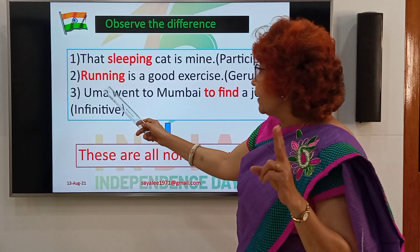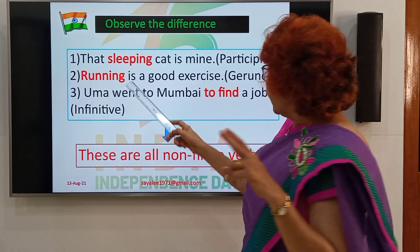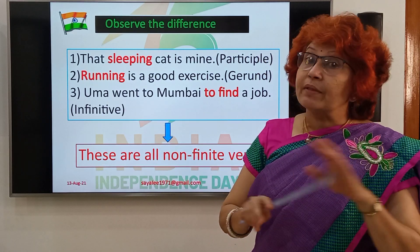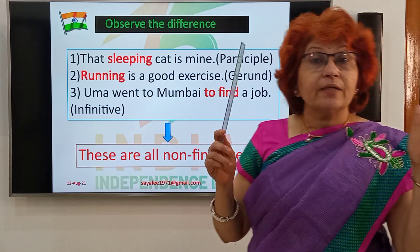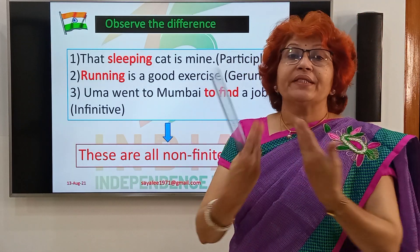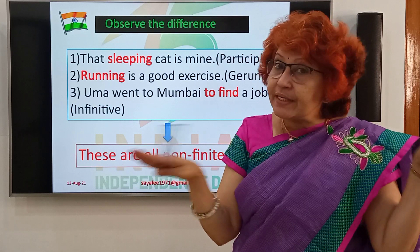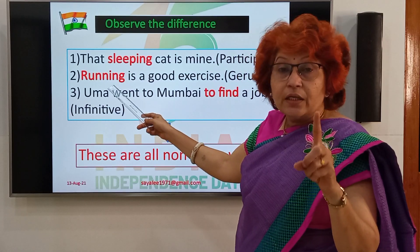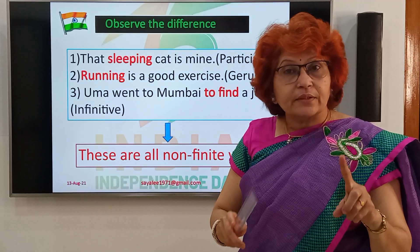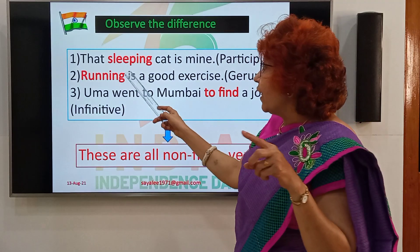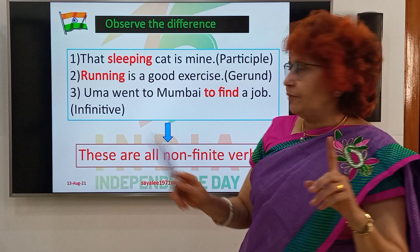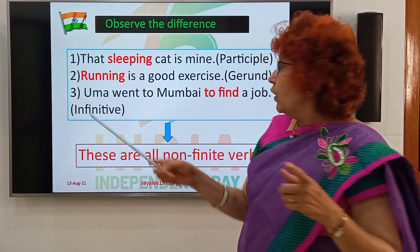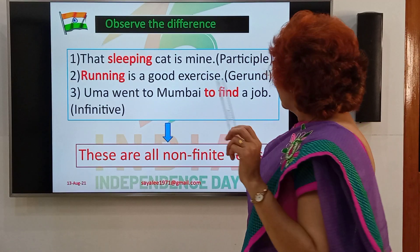See the second sentence: Running is a good exercise. Here 'running' appears again. But 'sleeping' in the previous sentence and 'running' here follow different grammatical rules — their roles are different. The first 'sleeping' is a present participle, and here 'running' is a gerund. Why is it a gerund? Because it functions as a noun — it is the subject of the verb 'is'. 'Running' means 'the act of running', which is a noun role. Running is a good exercise — so it is a gerund.